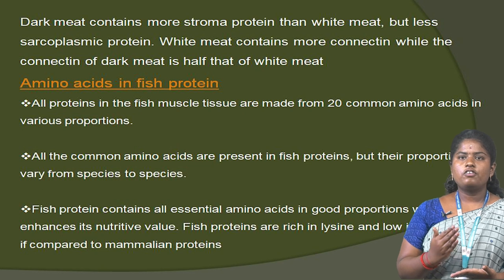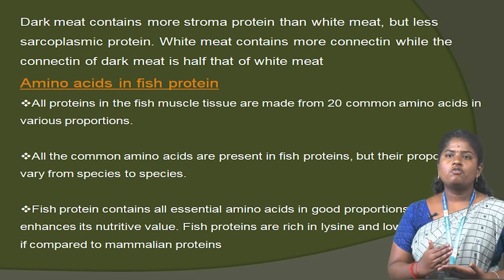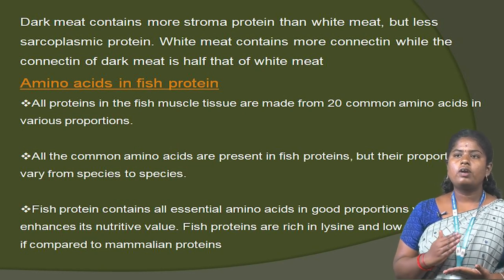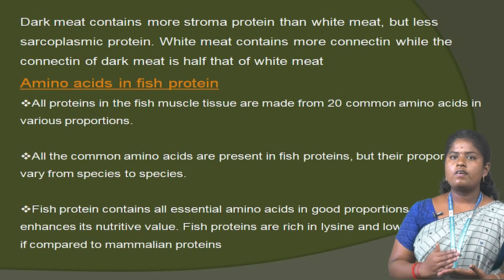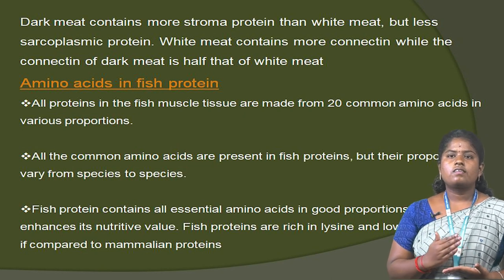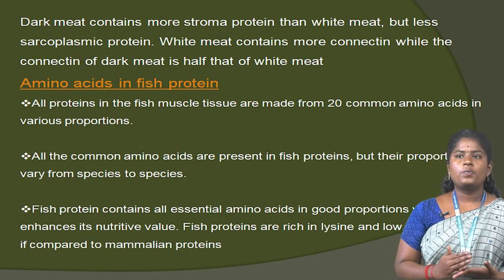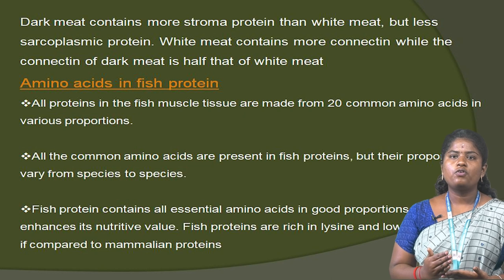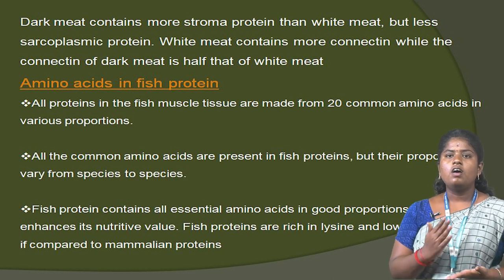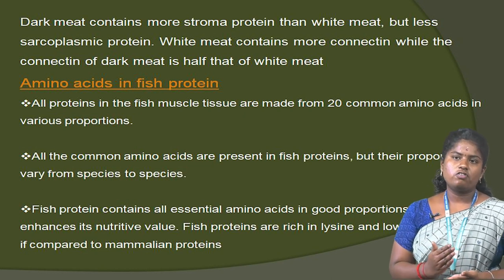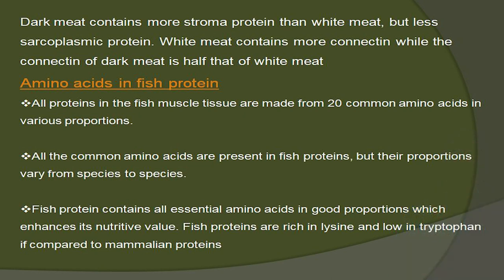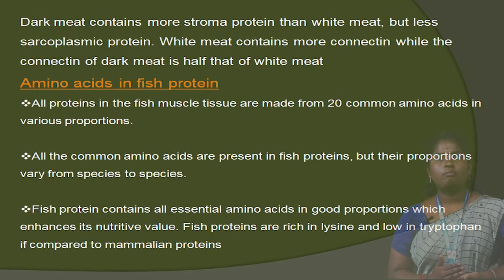Amino acids in fish protein. All proteins in fish muscle tissues are made from 20 common amino acids in varied proportions. All these common amino acids are present in fish protein, but the proportion varies from species to species. Fish protein contains all essential amino acids in adequate proportions, which enhances nutritional value. Fish protein is rich in lysine and low in tryptophan compared to mammalian protein.